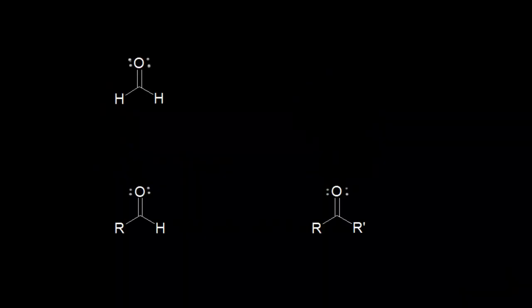Before we get into the reactivity of aldehydes and ketones, let's first review the bonding in a carbonyl. A carbonyl is the carbon double bonded to the oxygen. Let's focus on this carbon in the formaldehyde molecule and find its hybridization state. To find hybridization, we use the steric number: the number of sigma bonds plus lone pairs. This carbon has three sigma bonds and zero lone pairs, giving a steric number of three, so this carbon is sp2 hybridized.